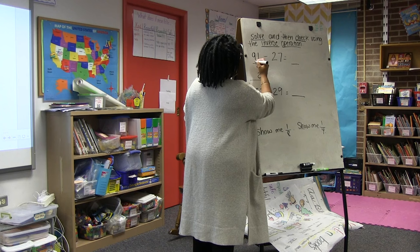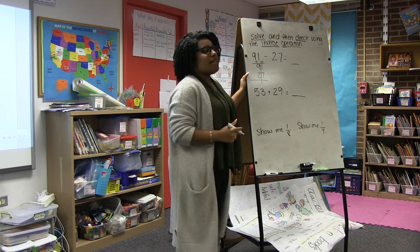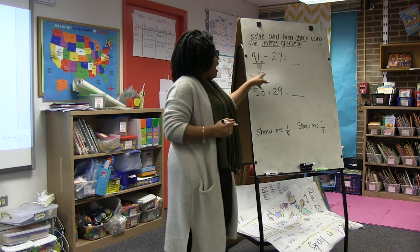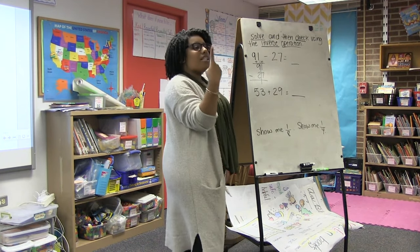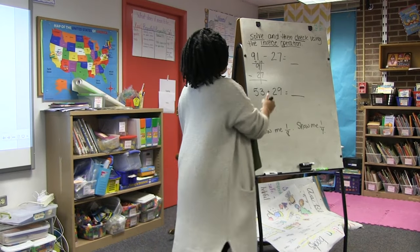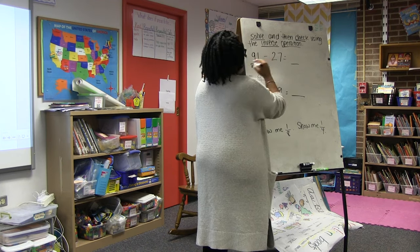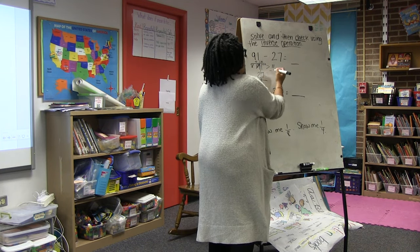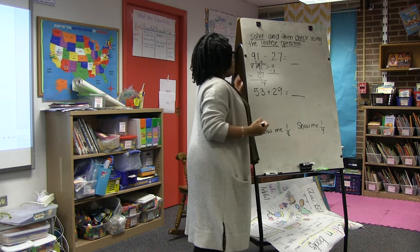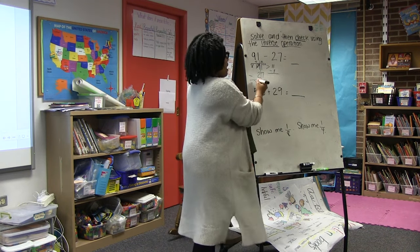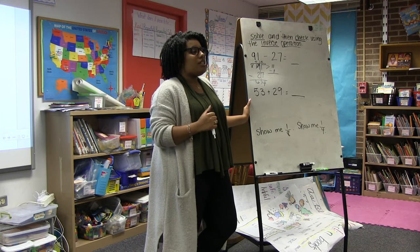Ms. Samuels walks through the problem step by step: line them up, label them, start in the ones place. She identifies the minus sign and determines she needs to regroup — going next door to borrow a group of ten, making nine into eight and ones into eleven. Eleven minus seven equals four; eight minus two equals six, giving an answer of sixty-four. She then invites a student to demonstrate the inverse operation.